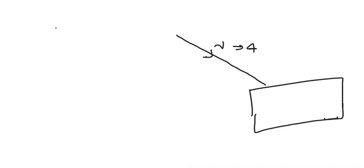Let us solve this problem. A glass plate is given and on this glass plate a light of certain wavelength lambda = 4000 Angstroms is incident. Angstrom is the unit of wavelength.